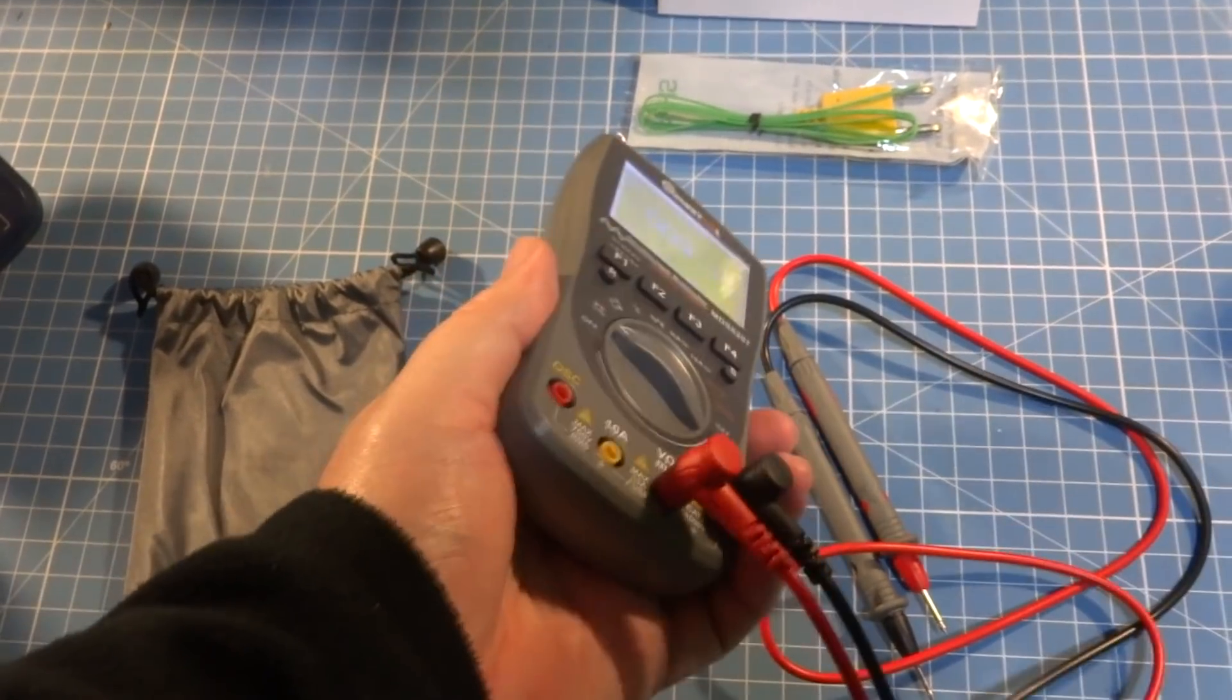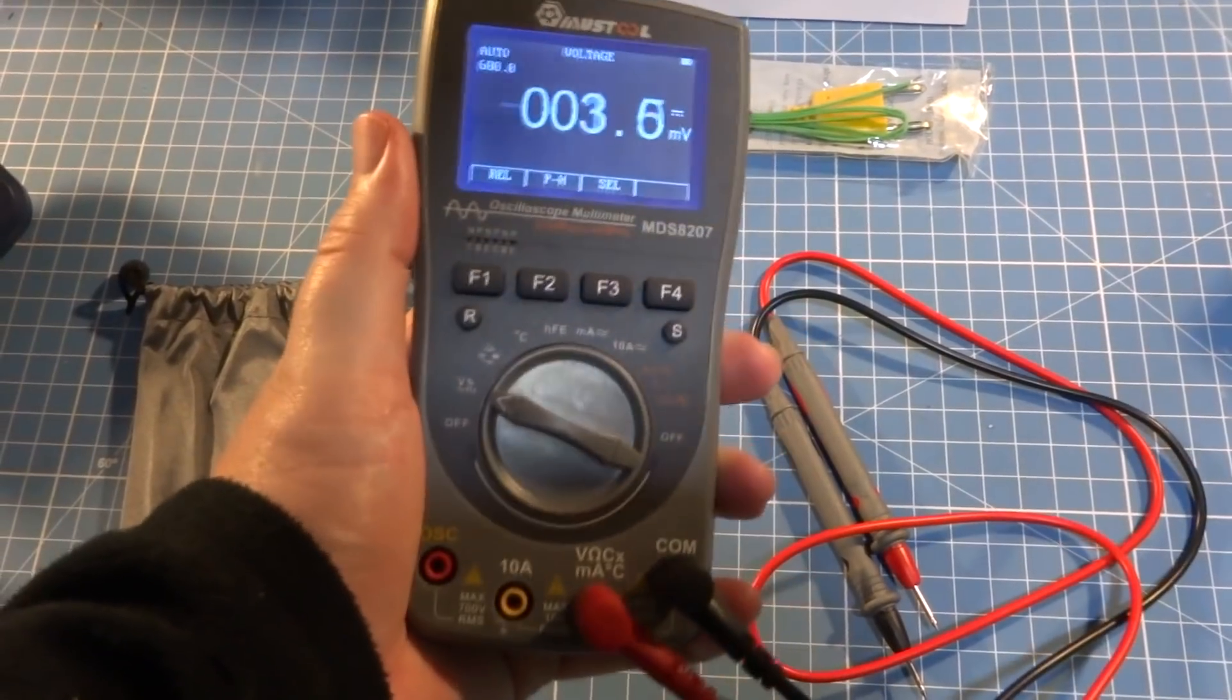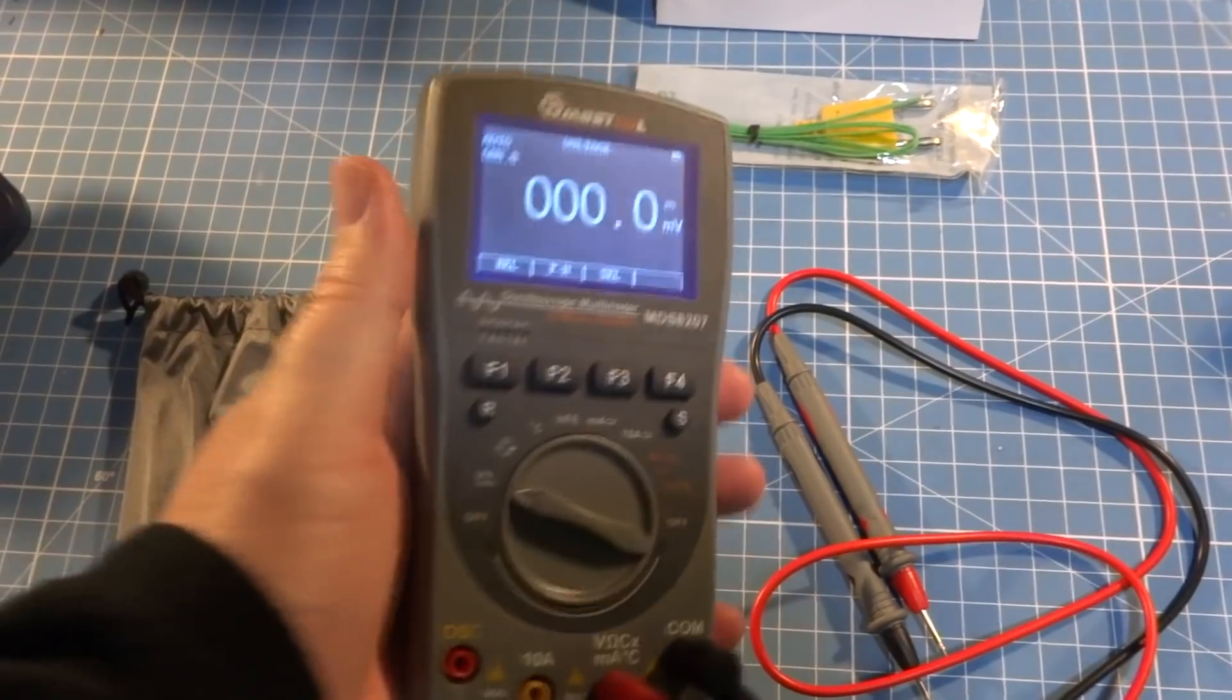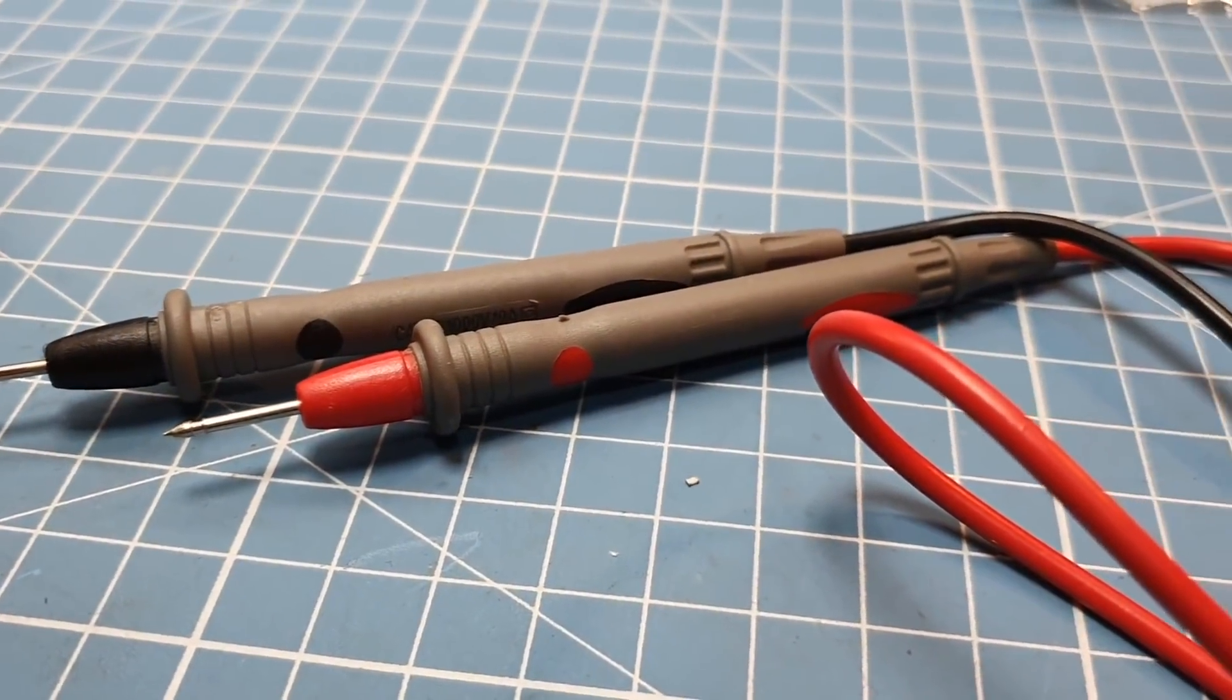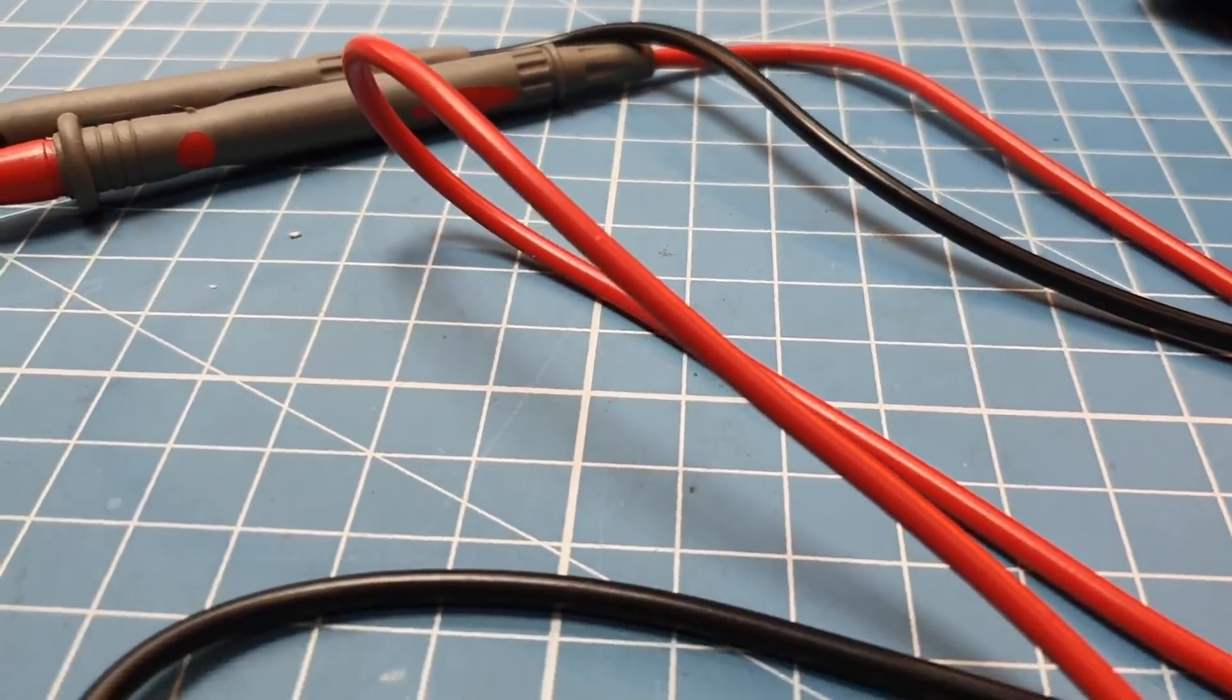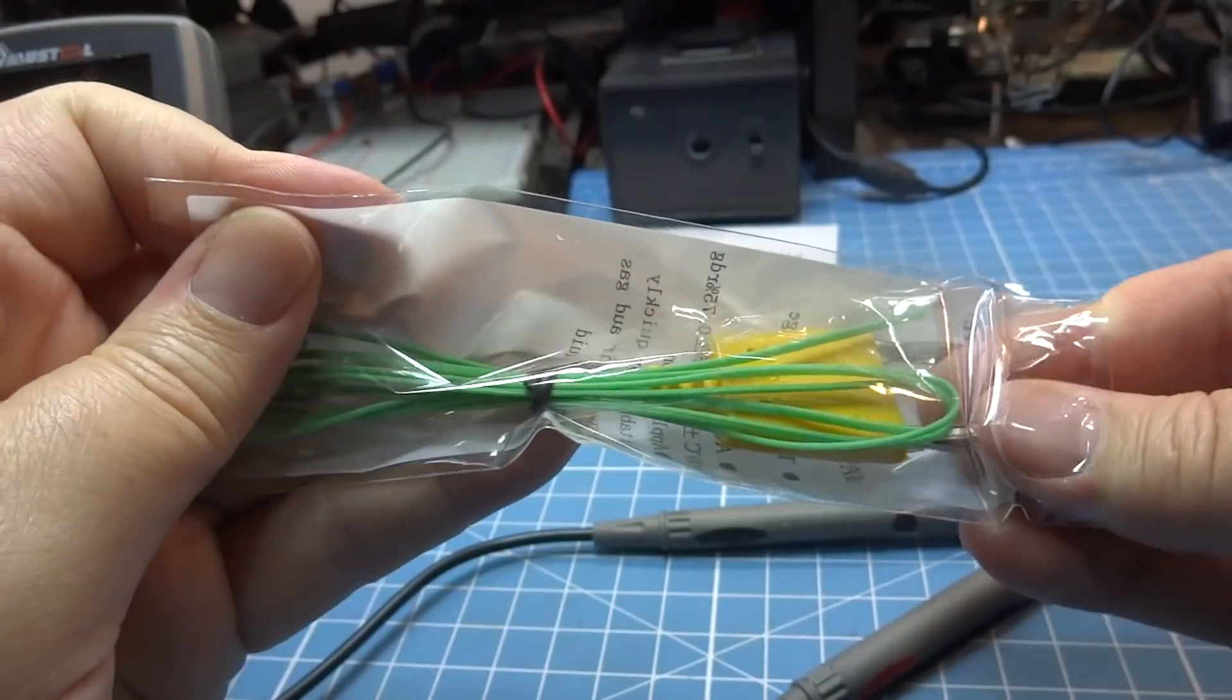E se tratando de ergonomia, o multímetro tem um ótimo tamanho de corpo e de tela. Além disso, o tamanho da tela e a resolução dos números permite uma boa visualização. A pegada do multímetro é ótima, e sua posição em pé também é bem agradável. O 8207 ainda possui bons cabos, macios, de boa qualidade, com 41 cm, além de acompanhar um termopar para medidas de temperatura.